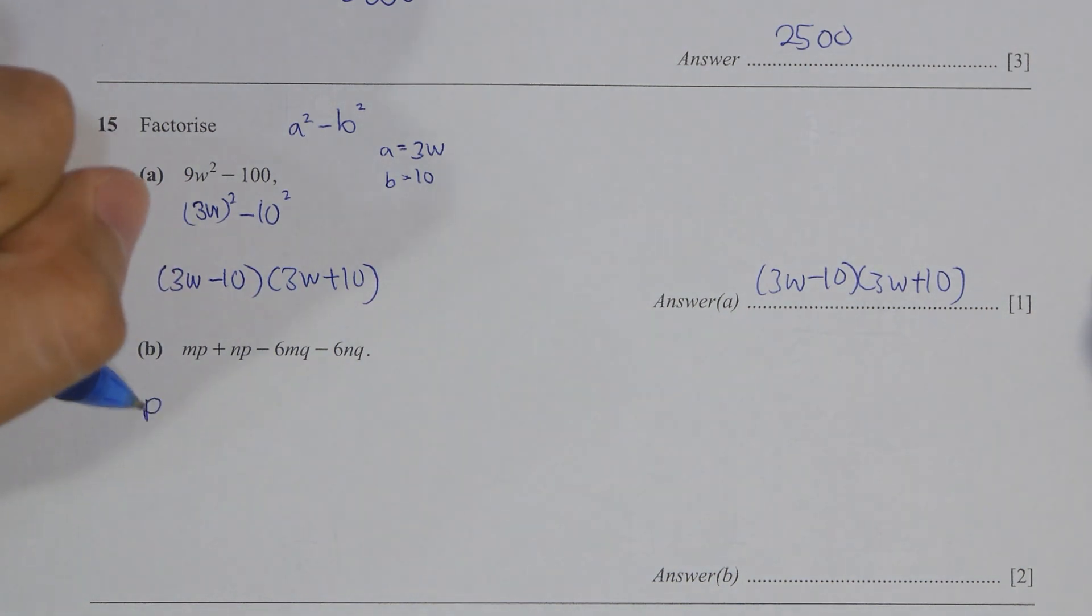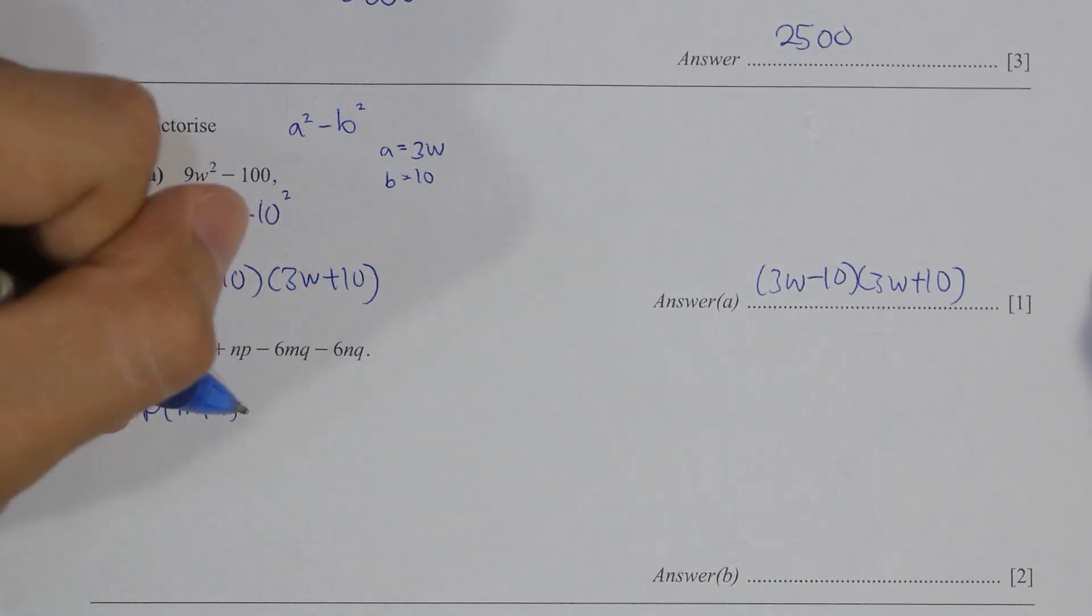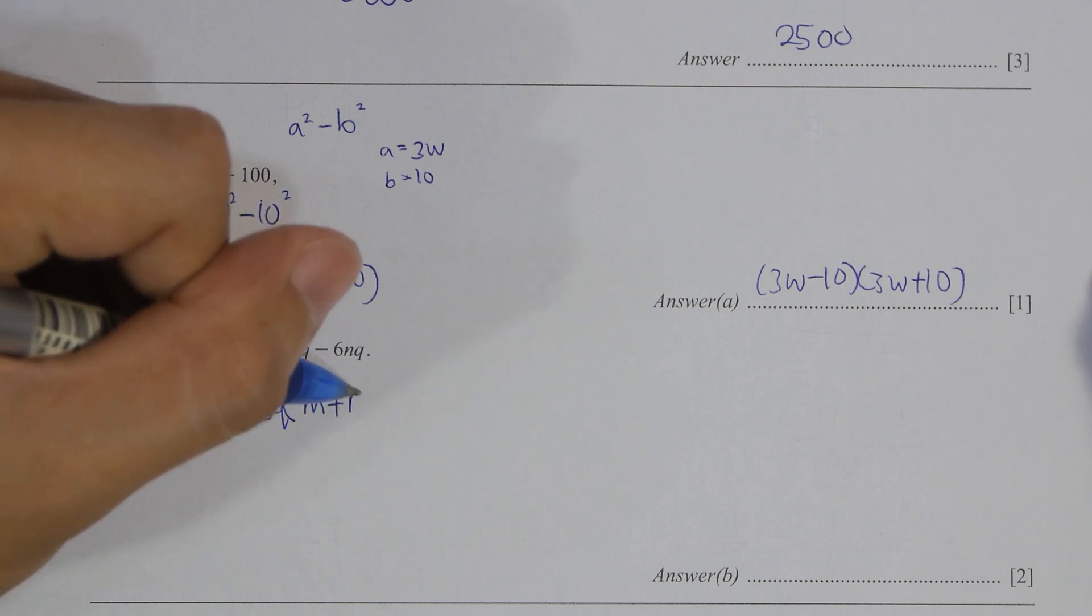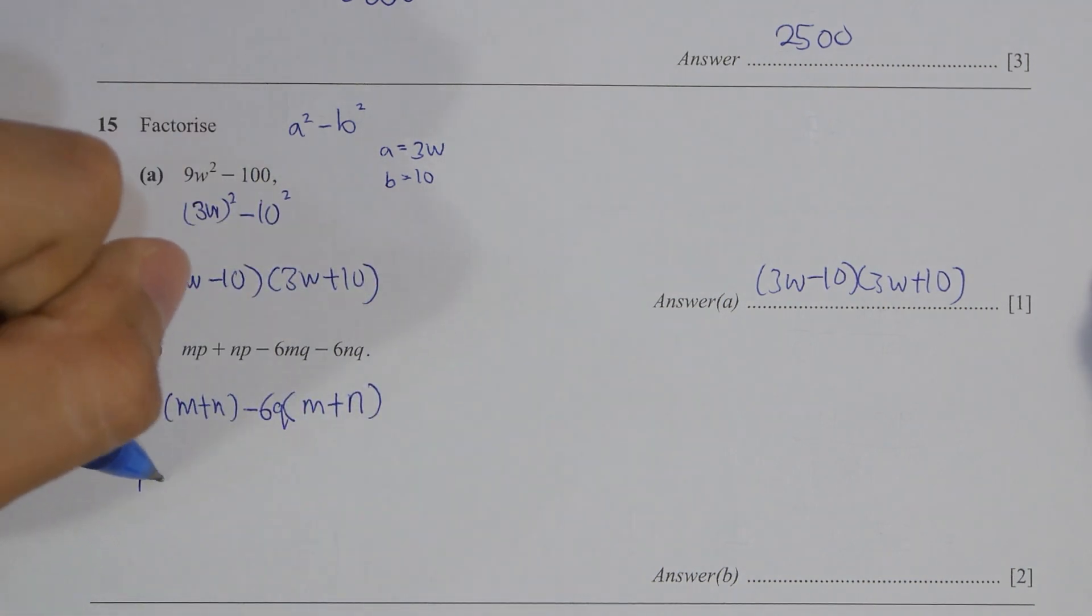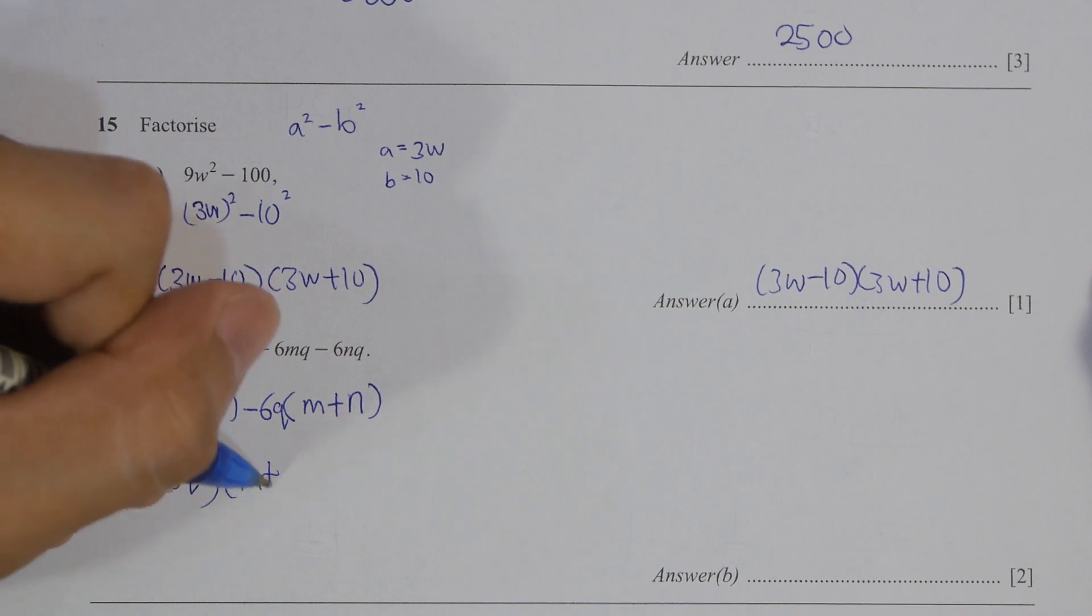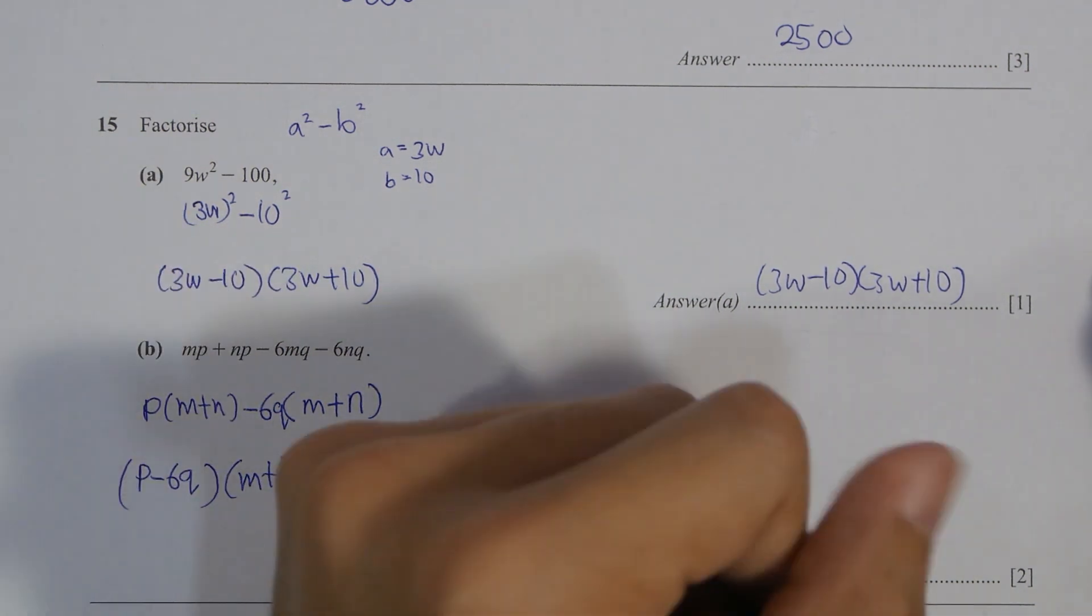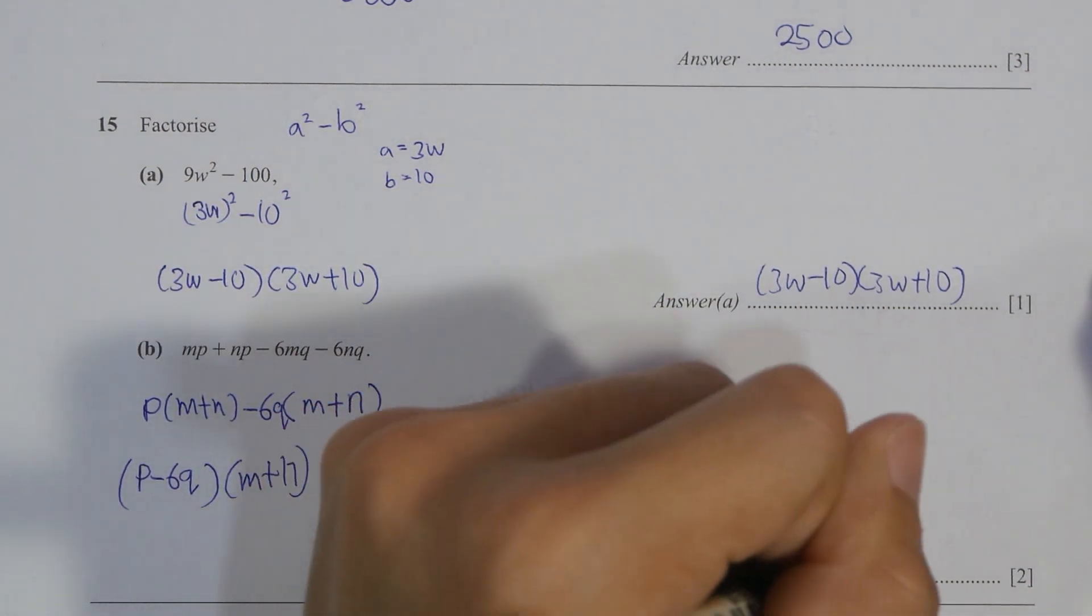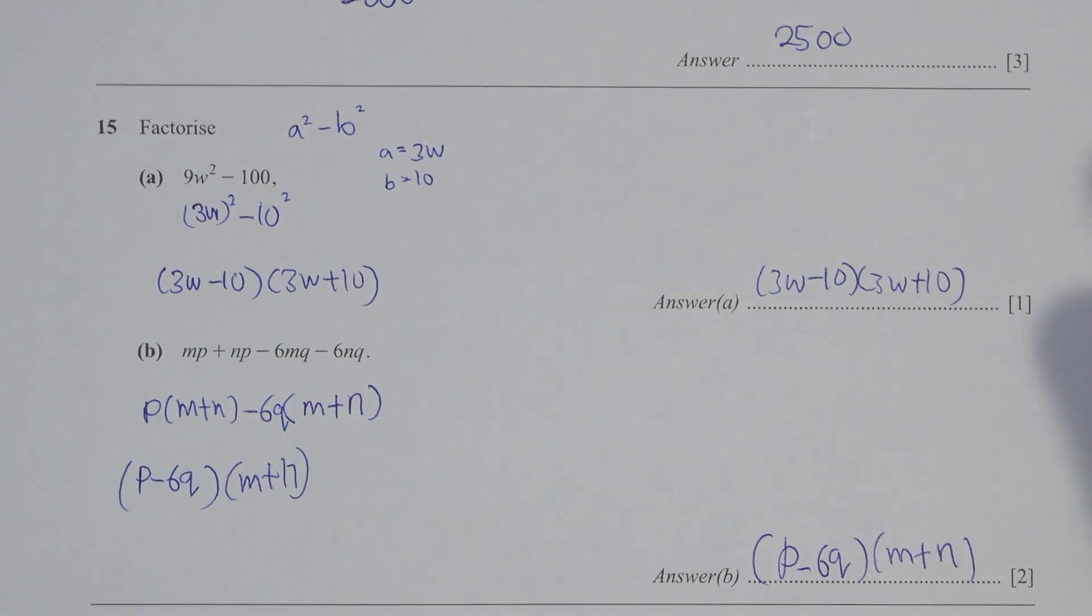As for part B, extract P from the front, then you will be left with M plus N. And for the last two variables there, I extracted 6Q out, then I get M plus N as well. So rearrange them, then you get the answer as P minus 6Q, M plus N.